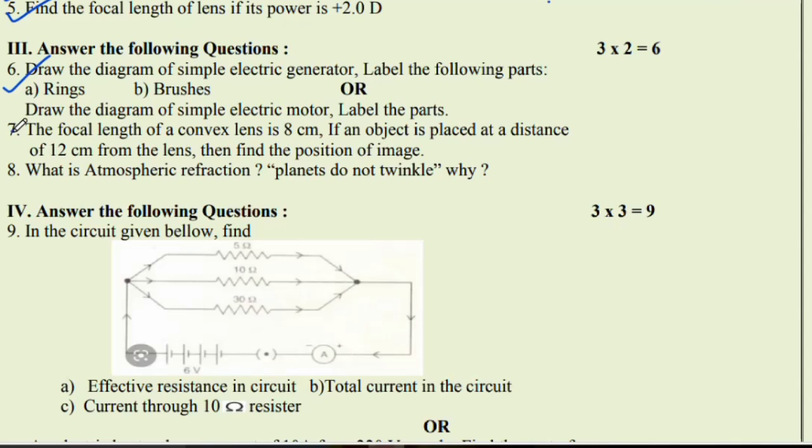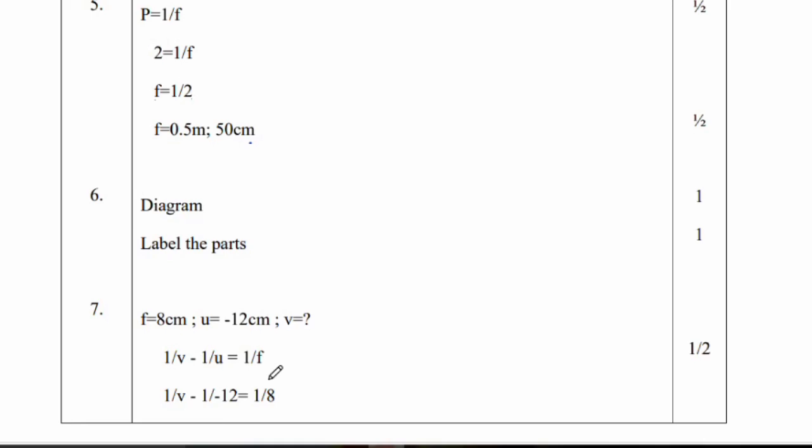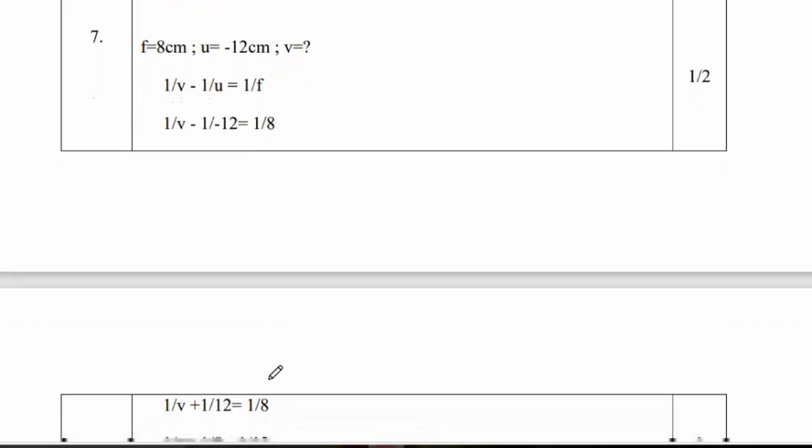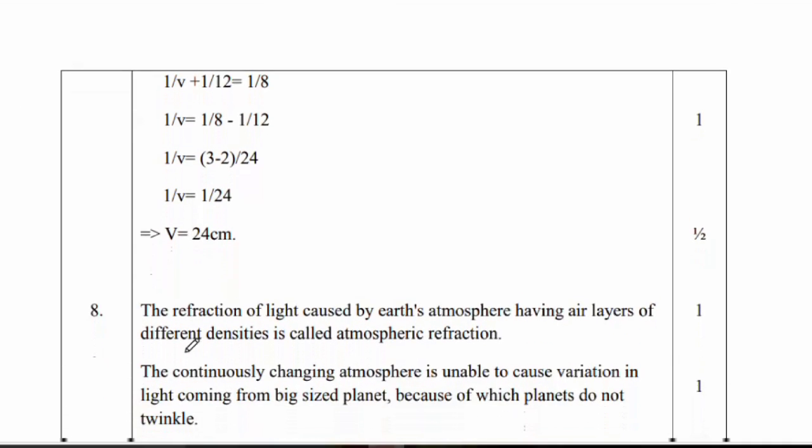Question number 7: The focal length of a convex lens is 8 centimeter. If an object is placed at a distance of 12 centimeter from the lens, then find the position of the image. So F is 8, U is 12. Therefore 1 by V minus 1 by U is equal to 1 by F. So then you will get 1 by V is equal to 1 by 8 minus 1 by 12. So 1 by V is equal to 3 minus 2 by 24, 1 by 24, so V is equal to 24 centimeter.